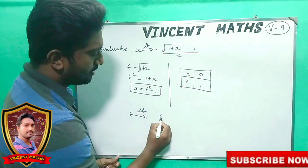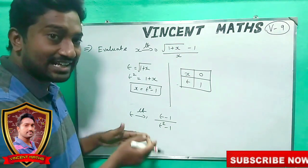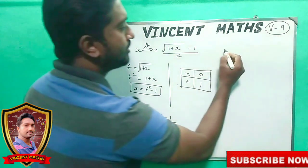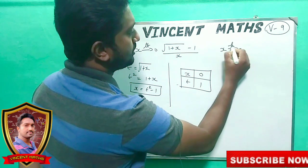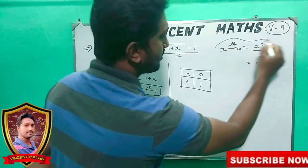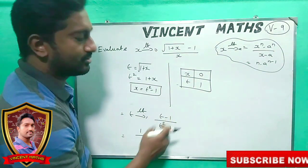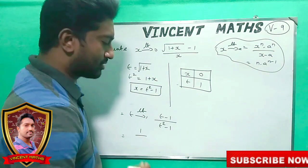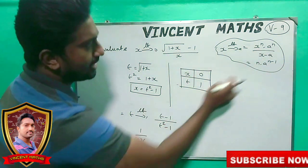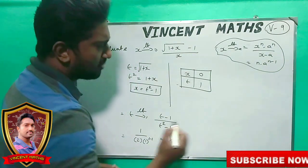t goes to 1. Square root of 1 plus x becomes t, and t minus 1 is in the denominator. x equals t squared minus 1. We use the standard formula: limit x→a of (xⁿ − aⁿ)/(x − a) = n·aⁿ⁻¹. So (t² − 1)/(t − 1) with n equals 2 and a equals 1 gives 2 times 1 power 2 minus 1, which equals 1 by 2.